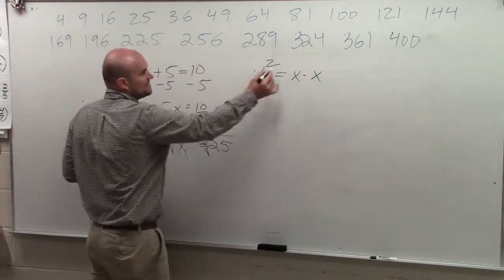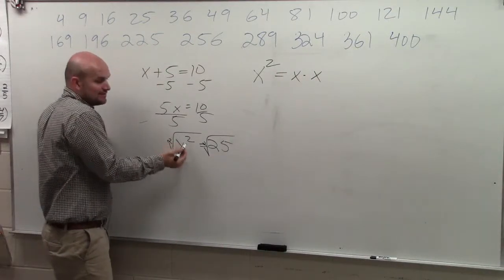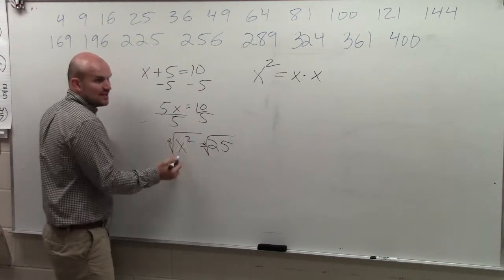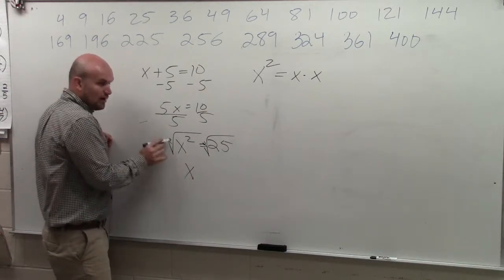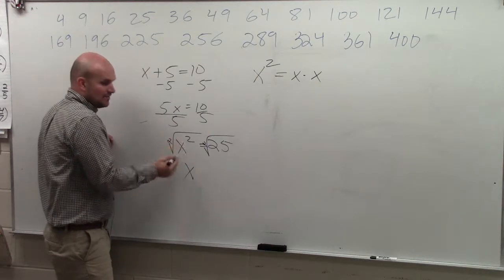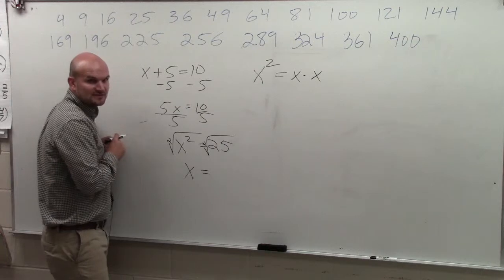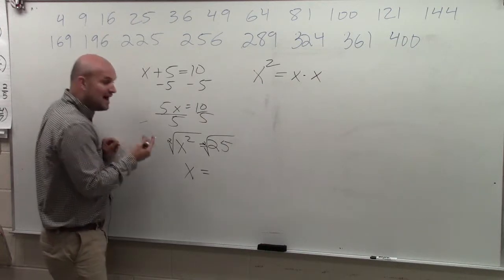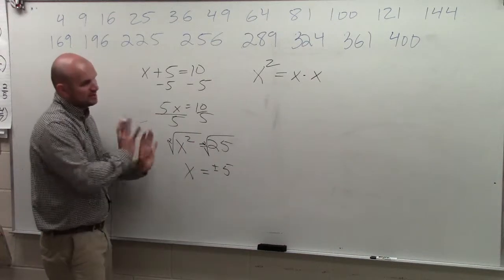Now, remember, x squared means x times x. So the square root is going to mean, what number do I have to multiply by itself that gives me x squared? Well, we know from this example that number is x. Right? The square root of x squared. What number multiplied by itself gives us x squared? That's x. What number multiplied by itself gives us 25? 5, right? And it's actually plus or minus since I introduced the square root. But we'll get into that stuff later.